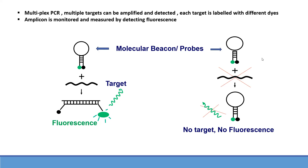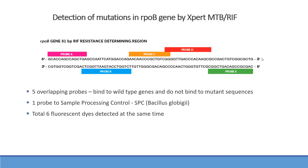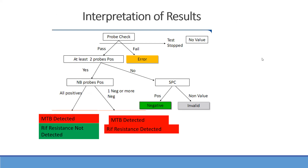These include molecular beacon probes — if no target is present, there is no fluorescence; if target is present, there is fluorescence. In detection of mutations in the RPOB gene by Expert MTB-RIF, there are five overlapping probes: A, B, C, D, and E, plus one probe for sample processing control (Bacillus globigii), and six other probe dyes detected simultaneously. The interpretation is straightforward: at least two probes should be present for a valid result. If all probes are positive, MTB is detected with no rifampicin resistance. If one or more probes are negative, MTB is detected and rifampicin resistance is detected.